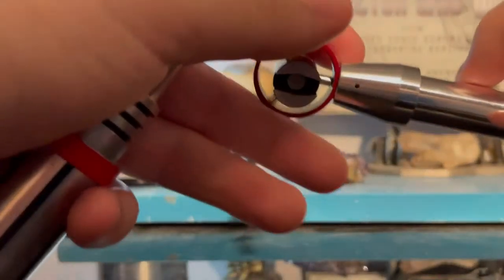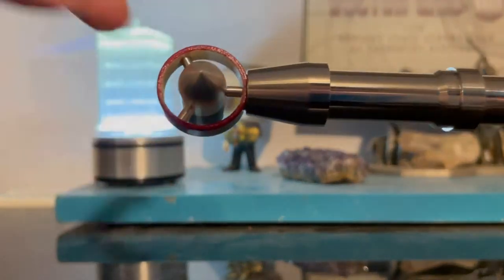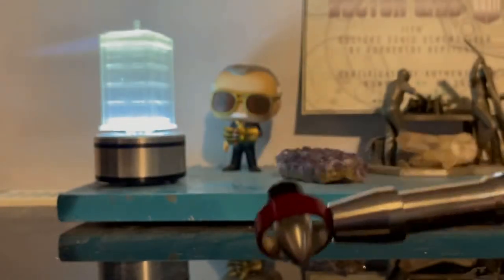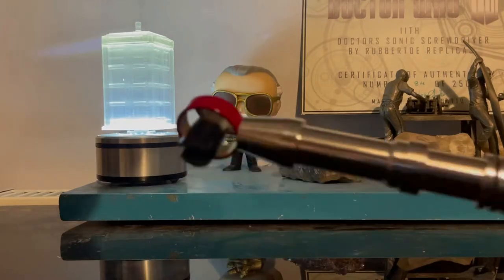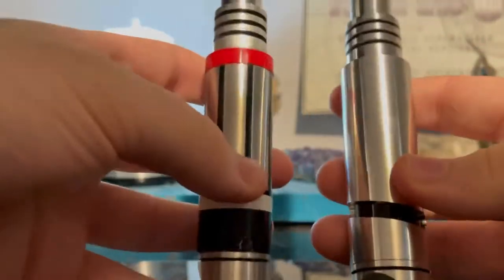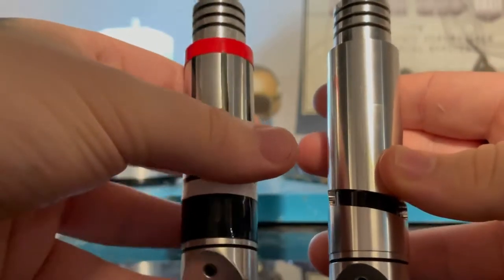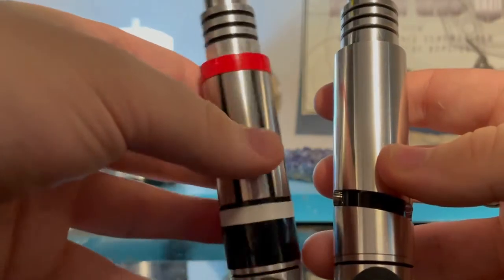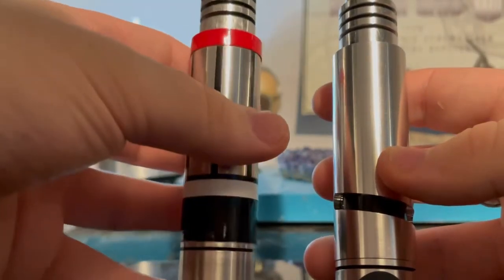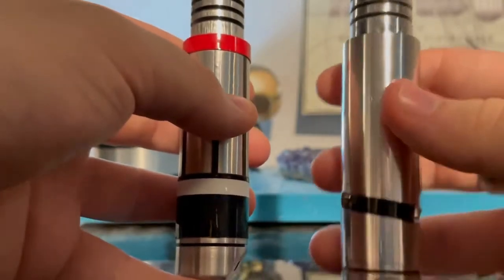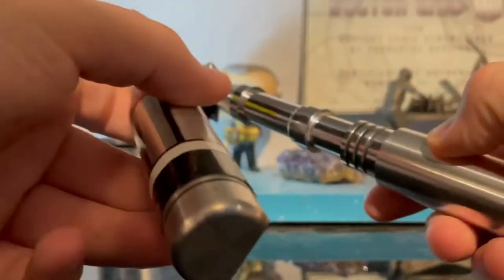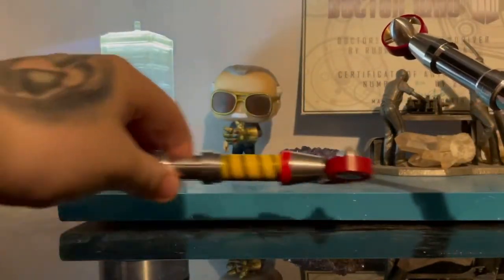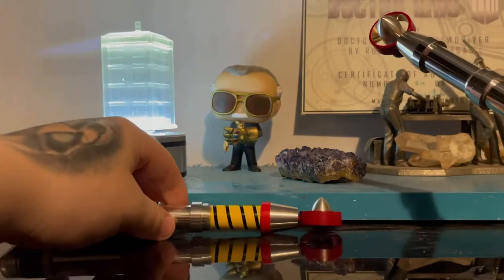I don't know why but the 4th and the Pertwee 2 never had paint on the inside of the halos, whereas the Pertwee 1 and the 5th sonic did. But these are the handles here. As you can see, the Pertwee 1 on the left has the decals and stuff like that, the pin striping. The Pertwee 2 doesn't because the Pertwee 2 is pretty much like the 4th basically.